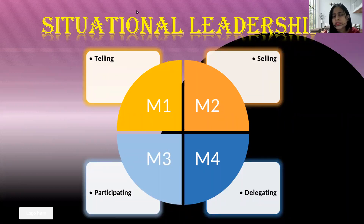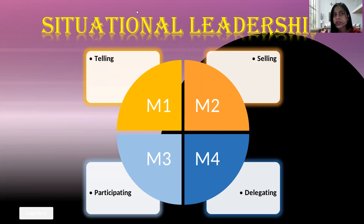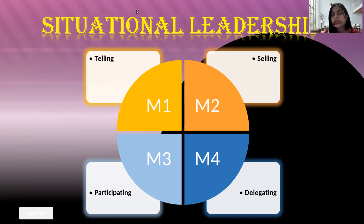So this is situational leadership. It gives you four choices — out of these four choices, you just have to select the one best possible choice which will help you get the best results from your team. We call it situational leadership because it gives us four different situations, and in each situation, a person decides how they are going to act.